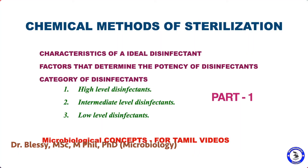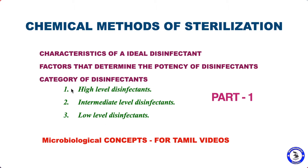Welcome back to another video in Microbiological Insights. In this video we will discuss the chemical methods of sterilization. The subheadings include: characteristics of an ideal disinfectant, factors that determine the potential of disinfectants, and the categories of disinfectants — high level, intermediate level, and low level disinfectants. If you want to watch these videos in Tamil, please subscribe to the channel Microbiological Concepts.